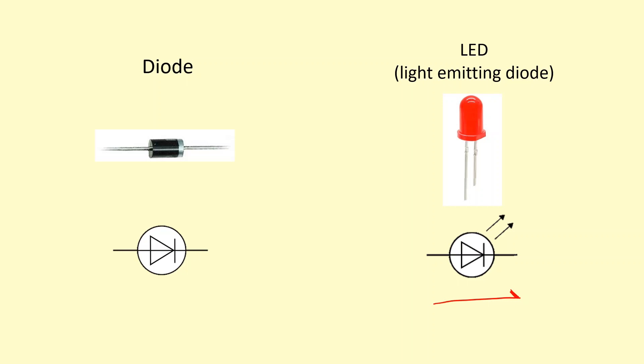So for example, if the current is going this way, it's going to glow red in this case. But if we try to make current flow in the opposite direction, it won't glow and it won't even conduct, it won't let the current flow through.